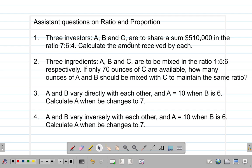These questions, I'm going to work through them, and the work here is supposed to help you in answering the questions in the assignment on ratio and proportion. All right, so here goes. Three investors, A, B, and C, are to share a sum of $510,000 in the ratio 7 to 6 to 4. Calculate the sum of money received by each.